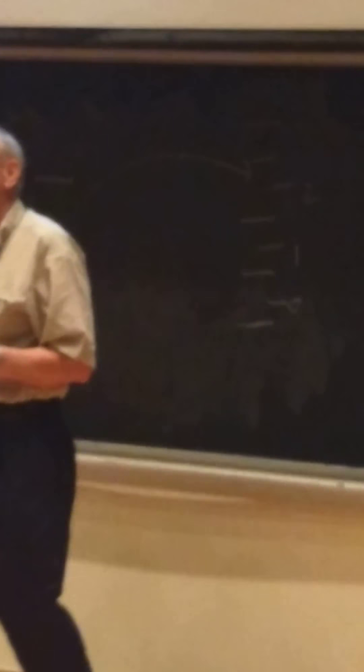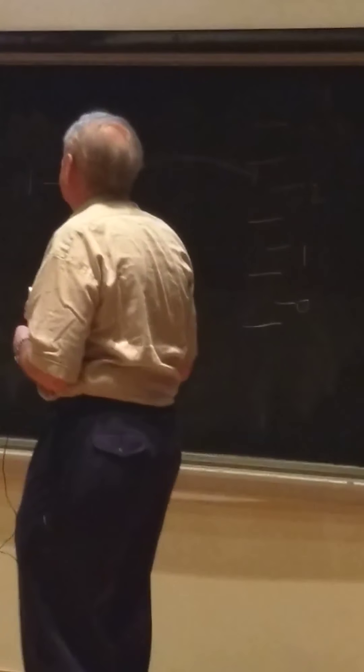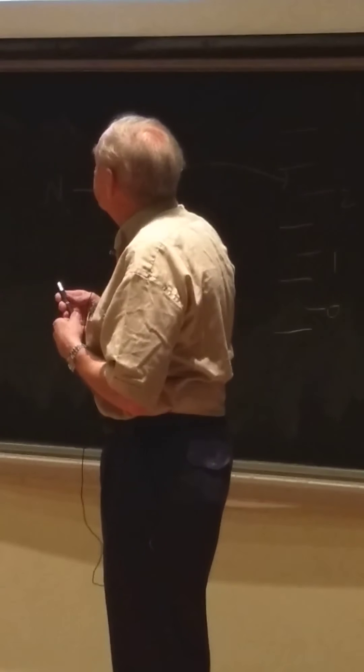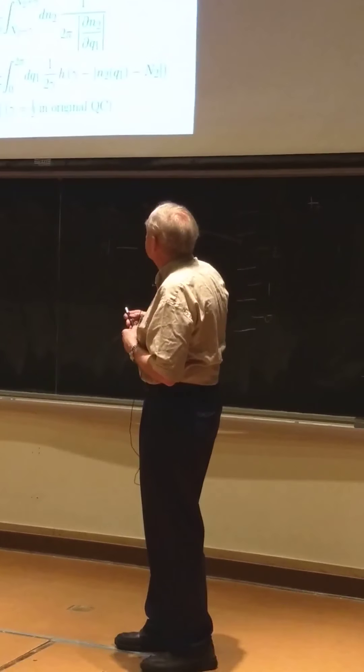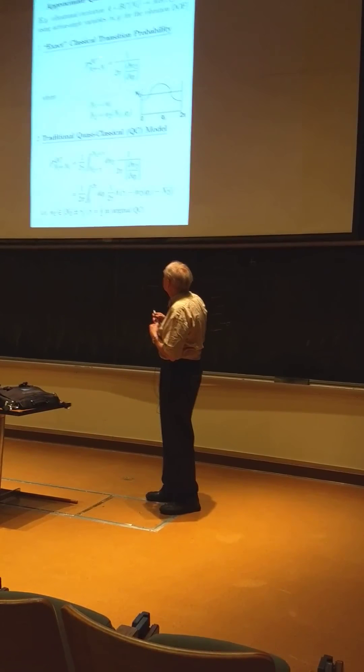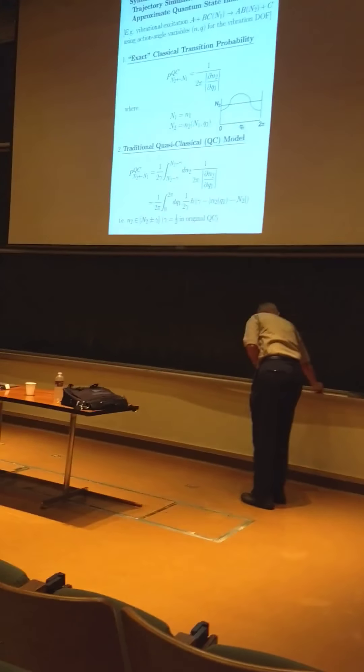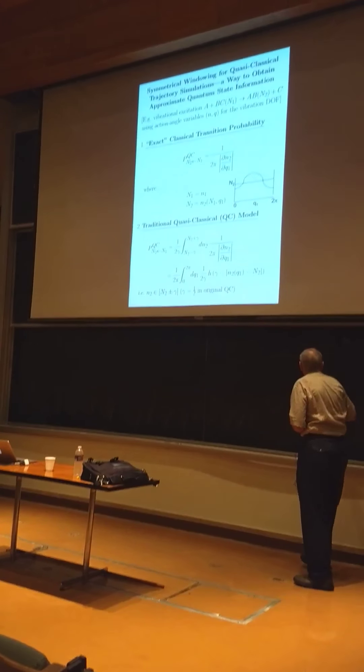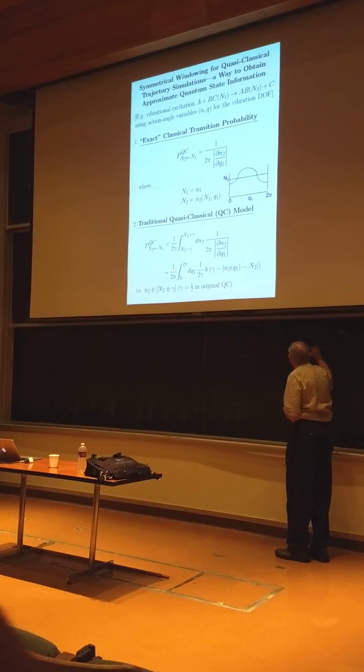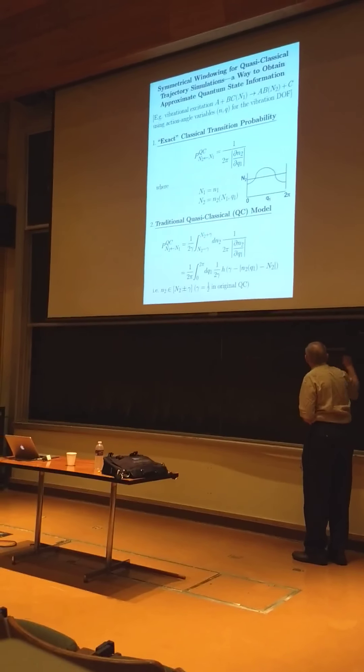And then the trajectory would land someplace. They'd run 1,000 trajectories. 200 would end up in this bin. So 200 over 1,000 was the probability of being in that final vibration. It was just getting a histogram distribution. And you got all the final vibrational states from that one forward trajectory. That was something called the quasi-classical trajectory method.